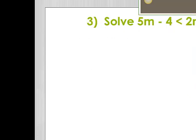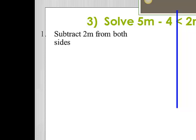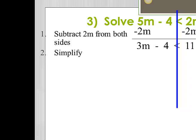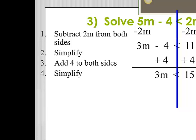Example number 3: solve 5m minus 4 is less than 2m plus 11. I'm going to split the inequality down the middle. In this example, I have variables on both sides, so it's a good habit to always get our variables on the left. I need to subtract 2m from both sides and simplify. I have 3m minus 4 is less than 11. In order to isolate the variable, I need to move that negative 4, so I'm going to add 4 to both sides. Simplify: 3m is less than 15.